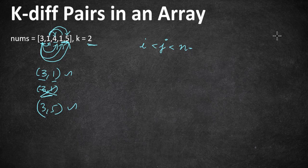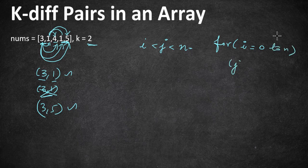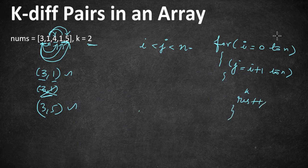How are we going to approach this programmatically? As we've seen, we iterate from the beginning and compare each element with the rest. We can use two for loops: the outer loop runs i from 0 to n, and the inner loop runs j from i+1 to n, so we compare each element only with the elements that come after it. If the difference equals k, we increment our result. This brute force approach takes O(n²) time.